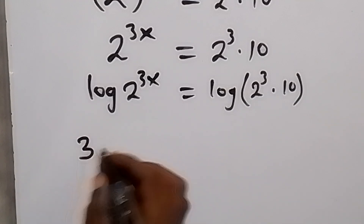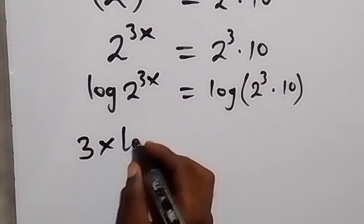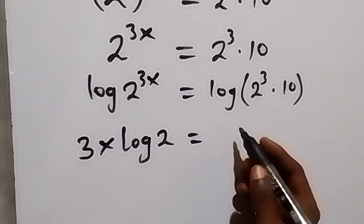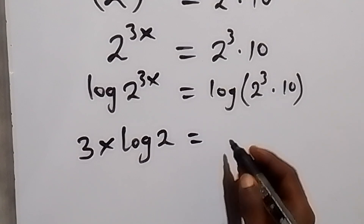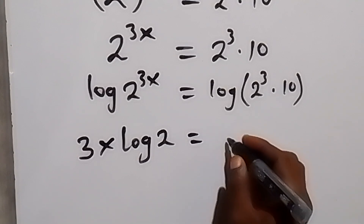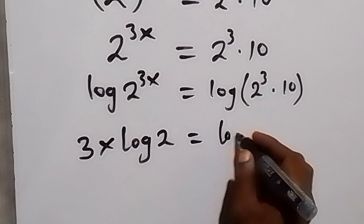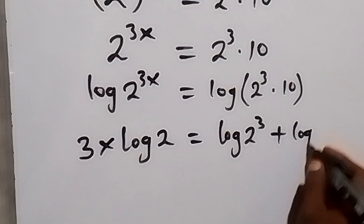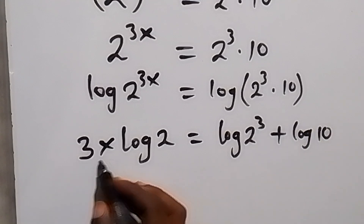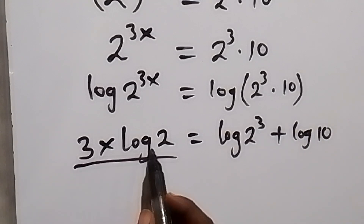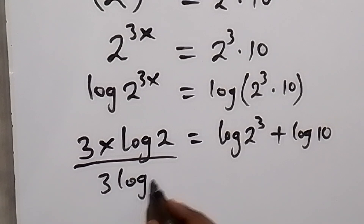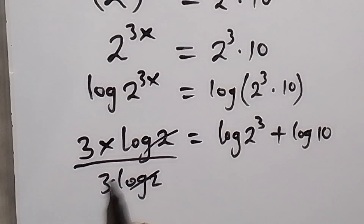Applying the law of logarithms by bringing 3x to the front, we have 3x times log 2. On the right, we separate into the sum of two logs: log of 2 raised to the power 3 plus log 10. We then divide both sides by 3 log 2 to isolate x, so log 2 cancels and 3 cancels.